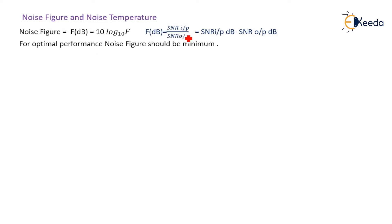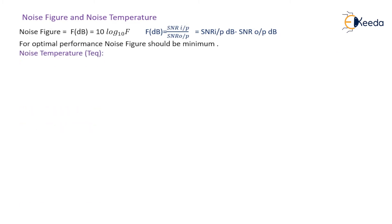Going through the basic formula: noise factor F in dB equals SNR at the input divided by SNR at the output. Since both are in dB, this becomes SNR input (dB) minus SNR output (dB). For optimal performance, the noise figure should be minimum.